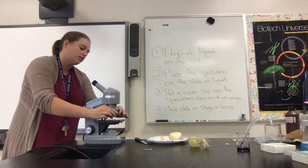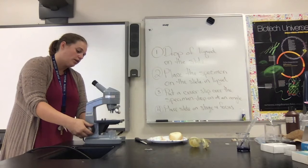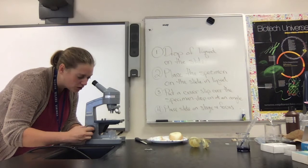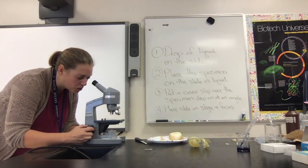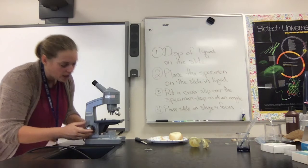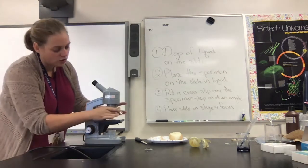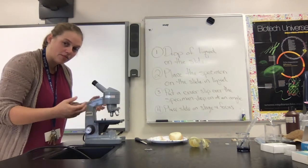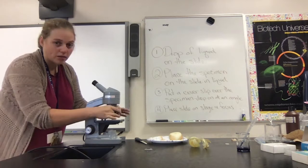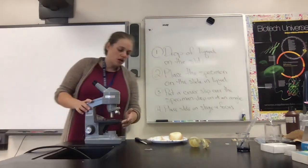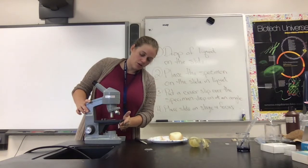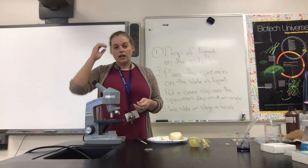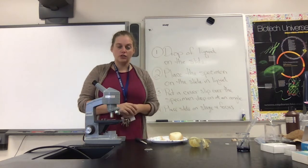Focus by starting on low power with the objective and stage as far apart as possible. As you look through the microscope, lower the objective toward the stage until you see detail. Once you see detail, switch to the next highest power and use the fine focus to get more and more detail all the way up to high power. There's also a little slider on your microscope that controls how much light is going through the slide, which you can use to increase the contrast of what you're looking at.